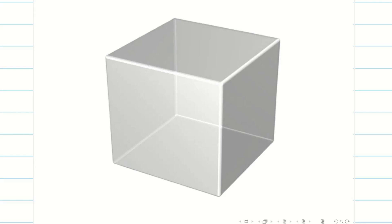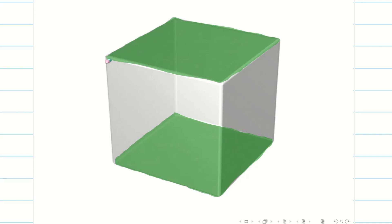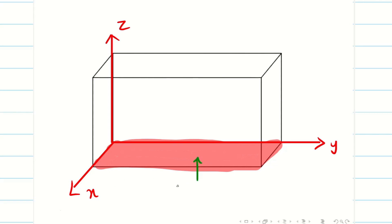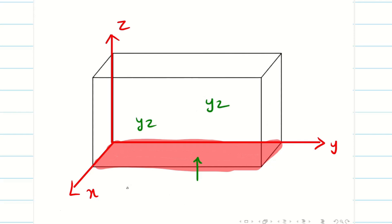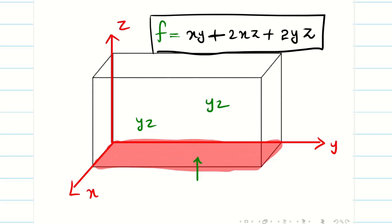A rectangular box has six sides: front and back, left and right, top and bottom. Since the box is open at the top, we consider only five sides: right, left, front, back, and the bottom. The bottom has area xy. Right and left sides each have area xz, and front and back each have area yz. So the total surface area formula for the open box is: f = xy + 2yz + 2xz.